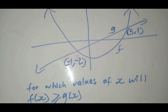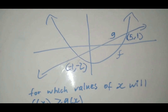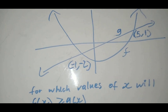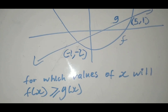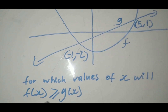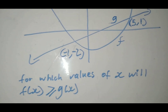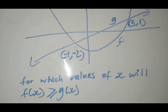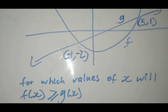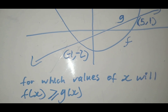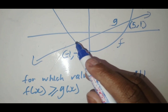So here is level 1. We have a straight line graph g and the parabola f(x), and they say for which values of x will f(x) be greater than g(x). So f(x) is the y-value of f, and g(x) is the y-value of g. When you see this question, it's very simple. When you see a question that says one graph must be greater than the other or less than the other, you have to strictly focus on the point of intersections - where they meet.